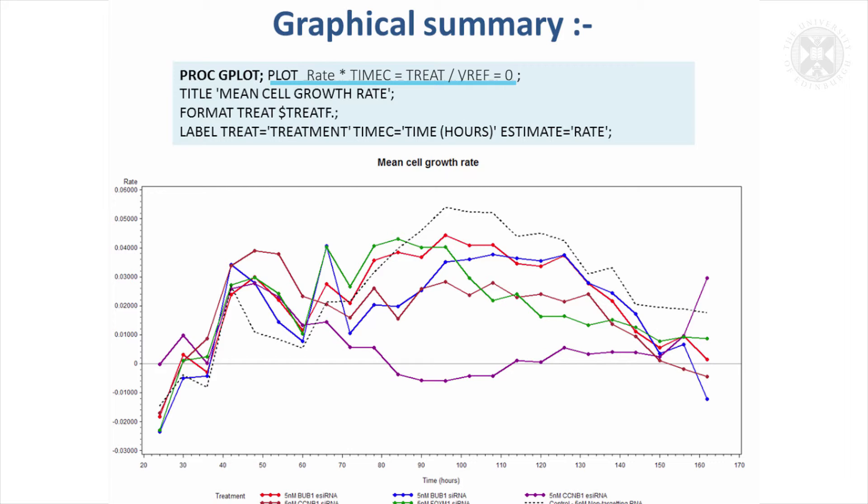So I've now got all the eight treatments coming in here and by using the format statement we had before it tells us what each of the colours refers to at the bottom. So it gives us quite an acceptable plot fairly easily with a title.